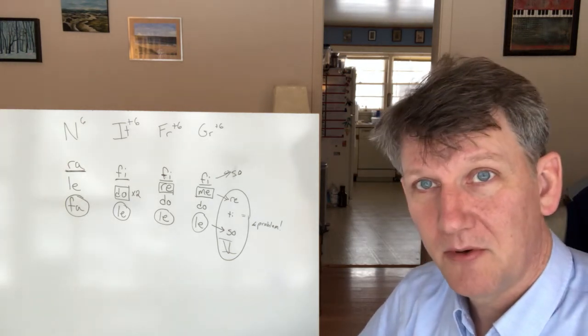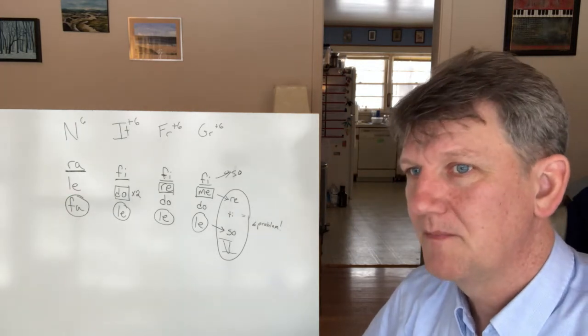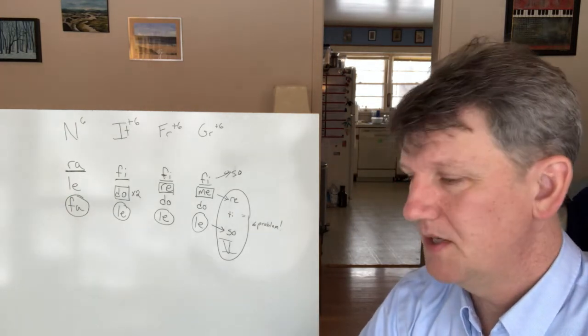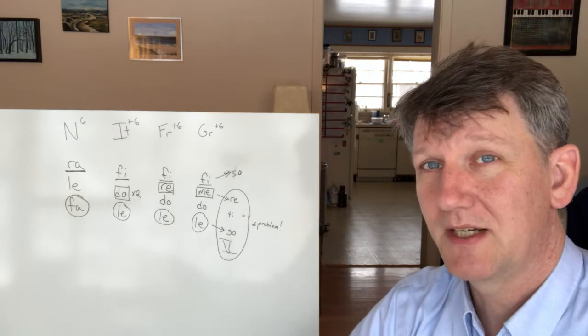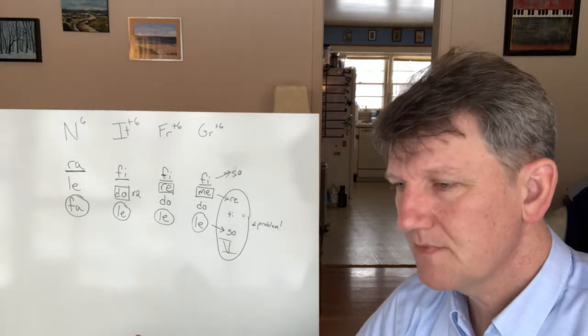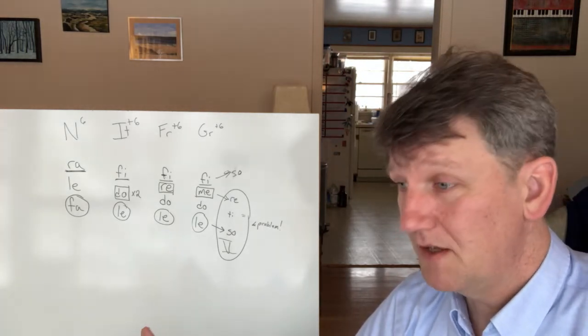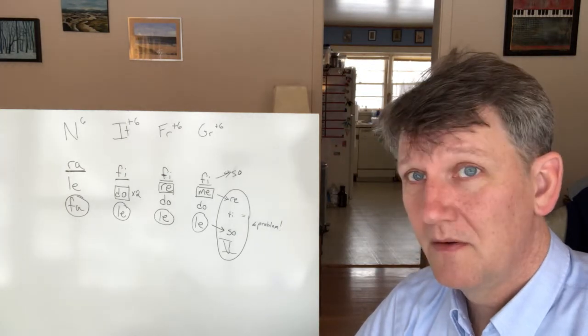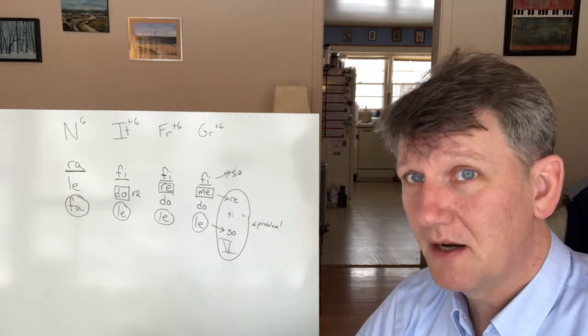So if you're listening to a progression and you're thinking, and you hear that there's an augmented six chord and it goes straight to a five chord, or a five-seven, then you know that it's probably not a German chord.